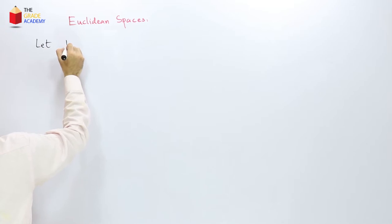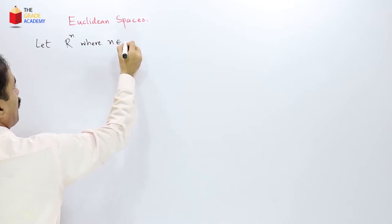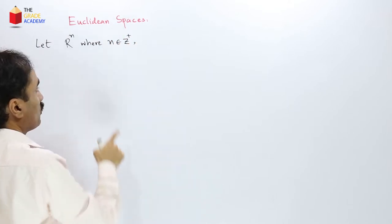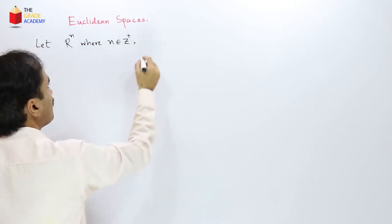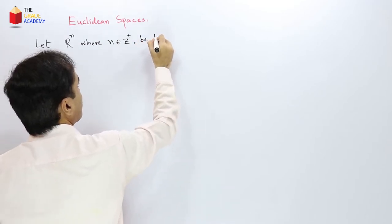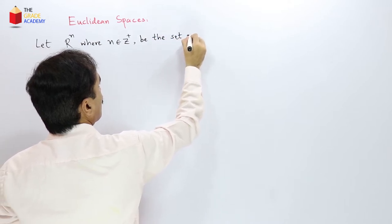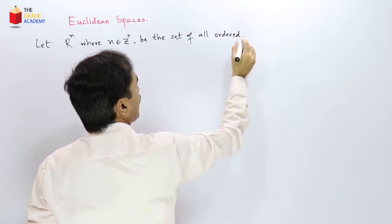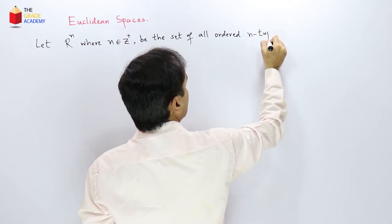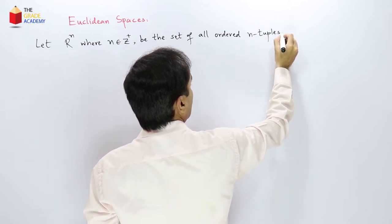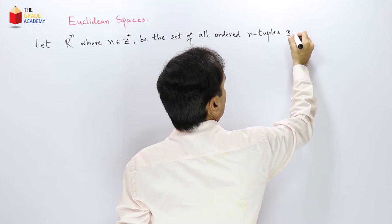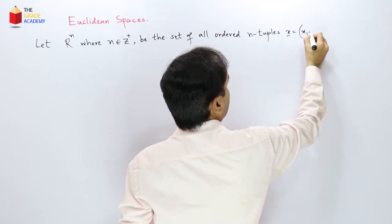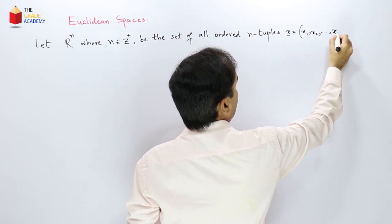So let Rn where n is a positive integer. So for any positive integer n, let Rn be the set of all ordered n-tuples of the form x1, x2 up to xn.